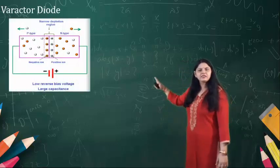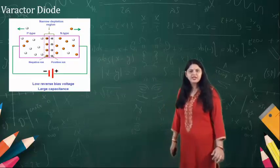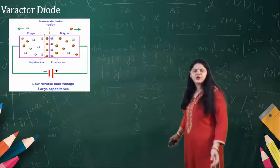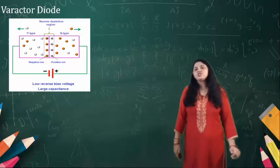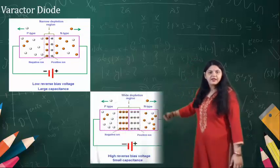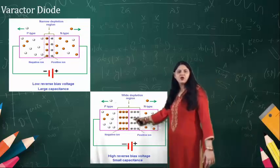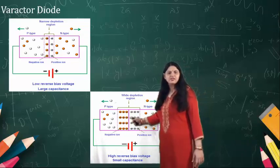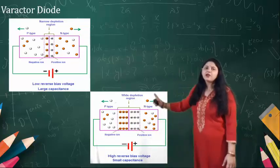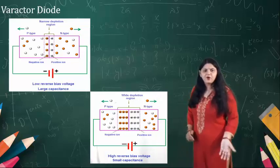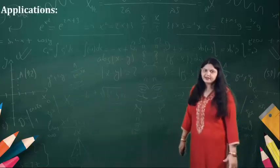This is the construction of the varactor diode. While applying a low reverse bias voltage to the varactor diode, there is a narrow depletion region which is formed and which provides a large capacitance value. Similarly, when the high reverse voltage is applied, there is a wider depletion region and it provides a small capacitance value. The varactor diode is made up of P-type and N-type material.